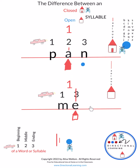If there's no blue fly next door, then it gets to keep the doors open. And remember, for a closed syllable, if there's a blue fly next door, then you close the door or you close up the house. Now you know the difference between a closed and open syllable.